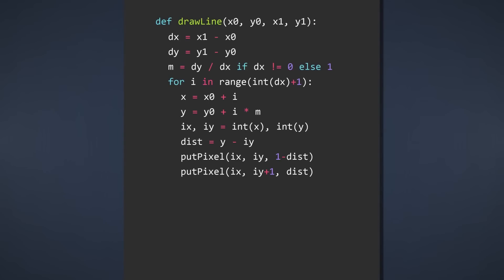First, let's fix the left quadrant. The reason it doesn't work is because our algorithm only draws lines from left to right. And in the left quadrant, the line is being drawn right to left.